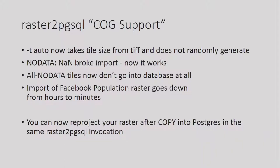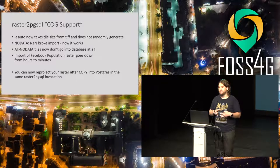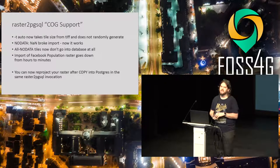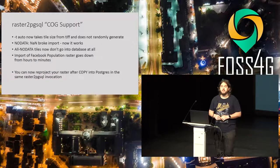The raster: I announced it as COG support — cloud-optimized GeoTIFF. PostGIS is probably not really about clouds, but if you have a raster in the COG format, you can now import it and it will import a lot faster. Facebook provided their population dataset filled with NaN no-data values, and PostGIS wasn't ready for that — we had to convert the raster and fill those with zeros or minus ones. Now you can just ingest it directly. If a raster is mostly no-data, it will skip importing the no-data tiles. If you need the no-data tiles, there's a switch for that.